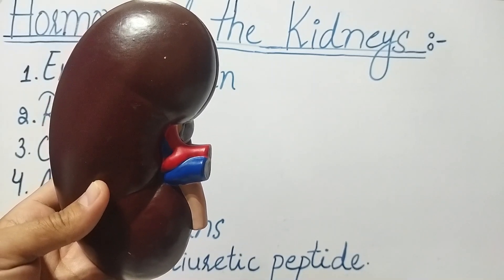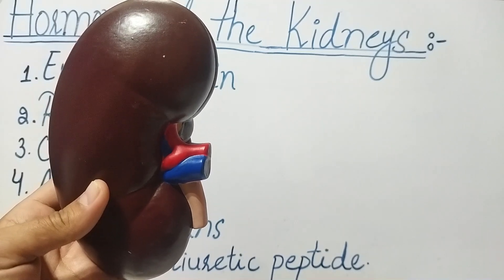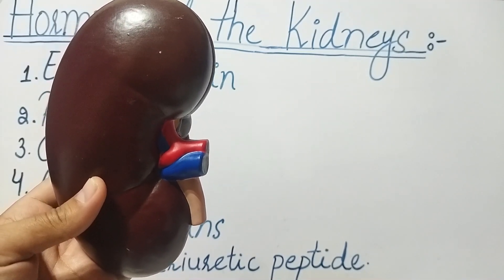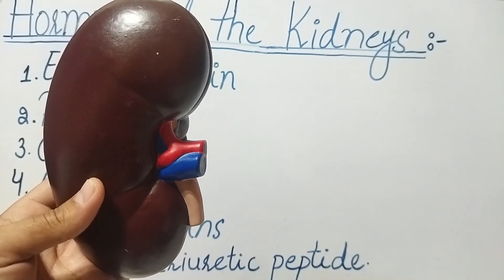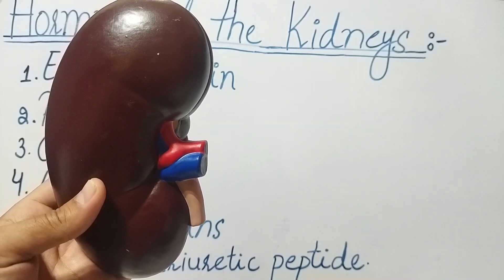Number five: prostaglandins. Prostaglandins are a group of compounds that have many functions in the body, including regulating blood pressure and inflammation. The kidneys produce several types of prostaglandins which are involved in a variety of physiological processes.